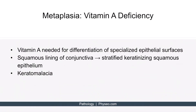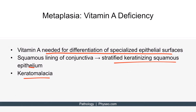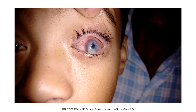Now let's discuss vitamin A deficiency. Vitamin A deficiency can cause metaplasia because vitamin A is needed for the differentiation of specialized epithelial surfaces. In vitamin A deficiency, the thin squamous lining of the conjunctiva undergoes metaplasia into stratified keratinizing squamous epithelium — a transformation known as keratomalacia. Grossly, an eye with keratomalacia appears cloudy with a softened cornea, and here's an image showing the cornea appearing softer and more gelatinous in consistency.